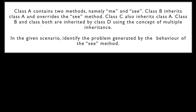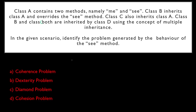The second question: Class A contains two methods, namely 'me' and 'C'. Class B inherits class A and overwrites the C method. Class C also inherits class A. Now class D inherits both class B and class C using the concept of multiple inheritance. Identify the problem generated by the behavior of the C method. Options are: A) coherence problem, B) dexterity problem, C) diamond problem, D) cohesion problem.